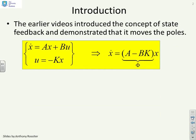State feedback, where you have a system of the form x dot equals Ax plus Bu, and the state feedback is u equals minus Kx, places the poles of the closed loop system A minus BK.